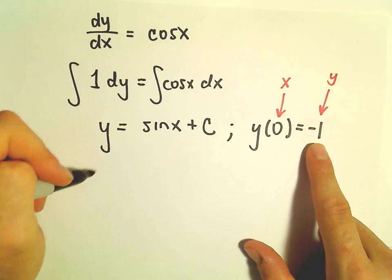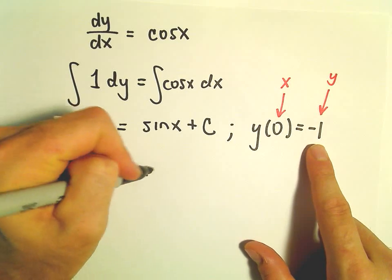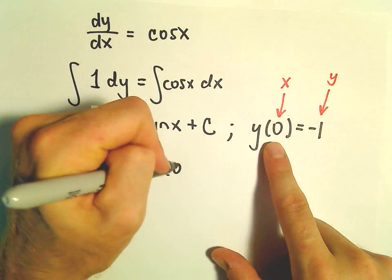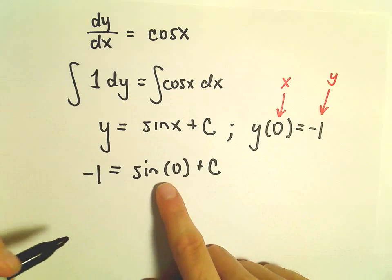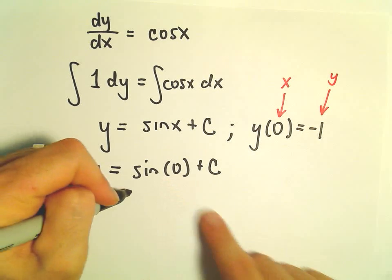So our y value is going to be negative 1. We'll get sine of 0. Sine of 0 is 0, so we're left with our C value of negative 1.